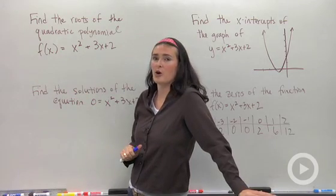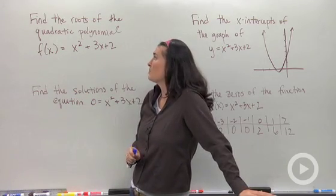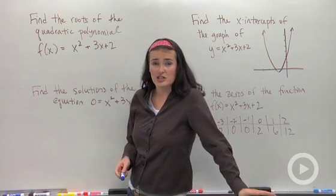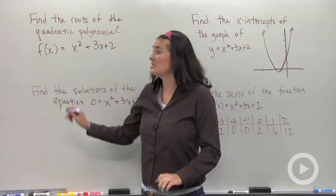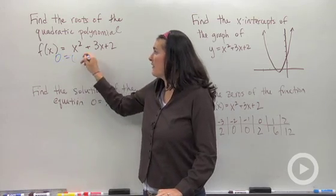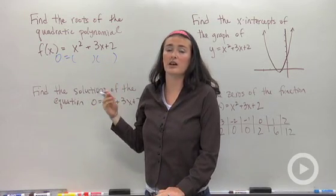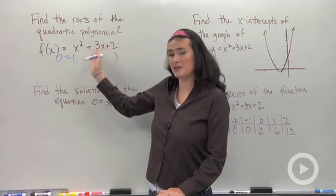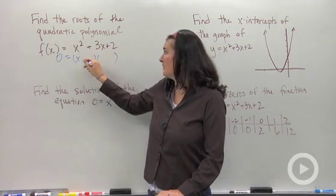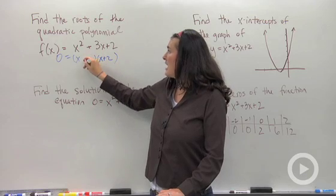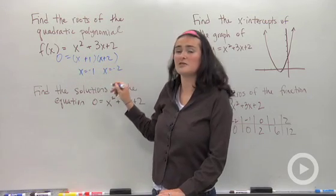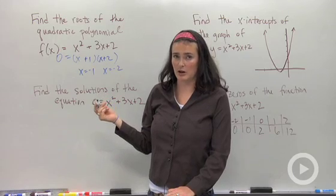Find the roots of the quadratic polynomial f(x) = x² + 3x + 2. If you saw those directions, what you would do is set this function equal to 0, factor or use the quadratic formula or complete the square or do graphing—choose whatever method you want to solve this. I'm going to factor because I'm a pretty good factorer, and I get the solutions x = -1 and x = -2 when I use the zero product property.